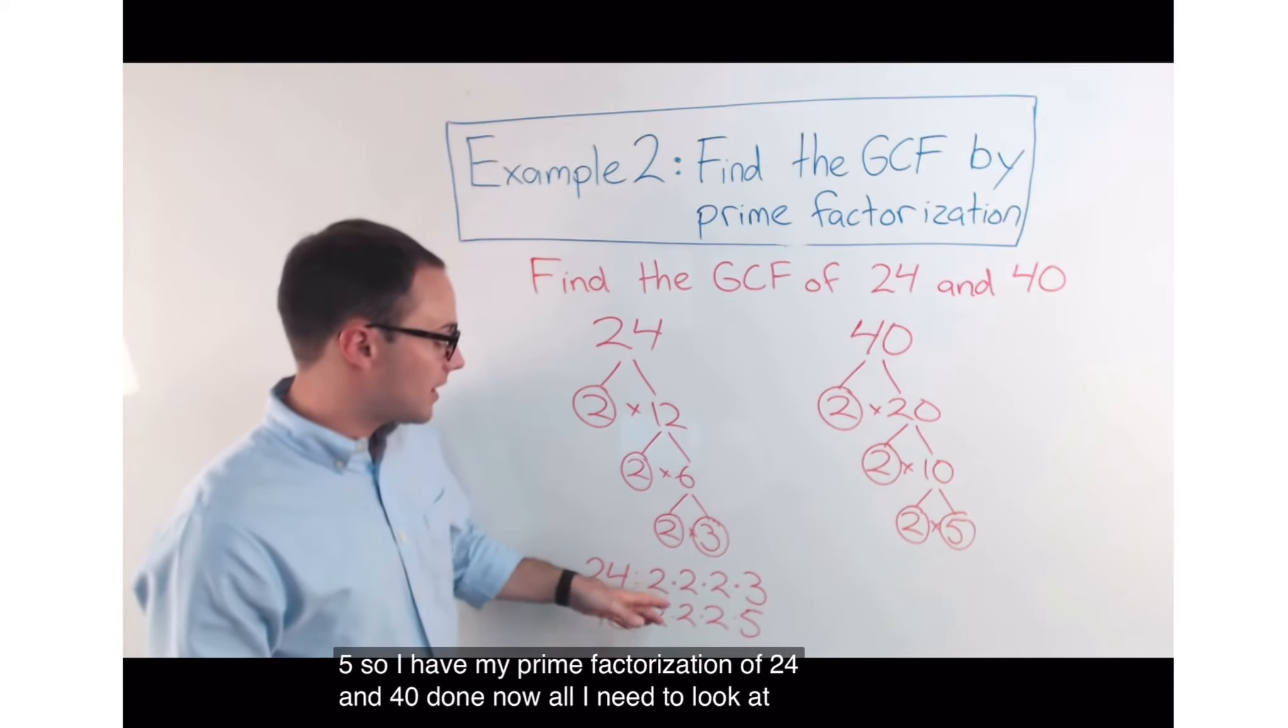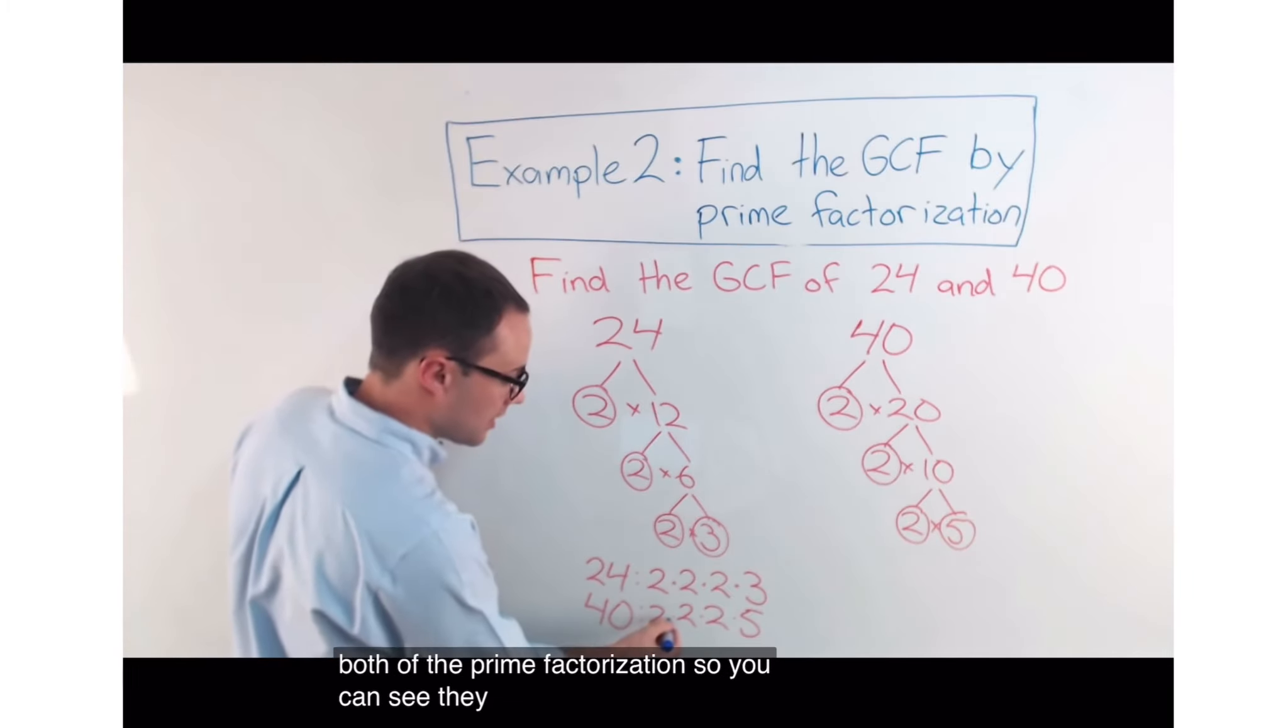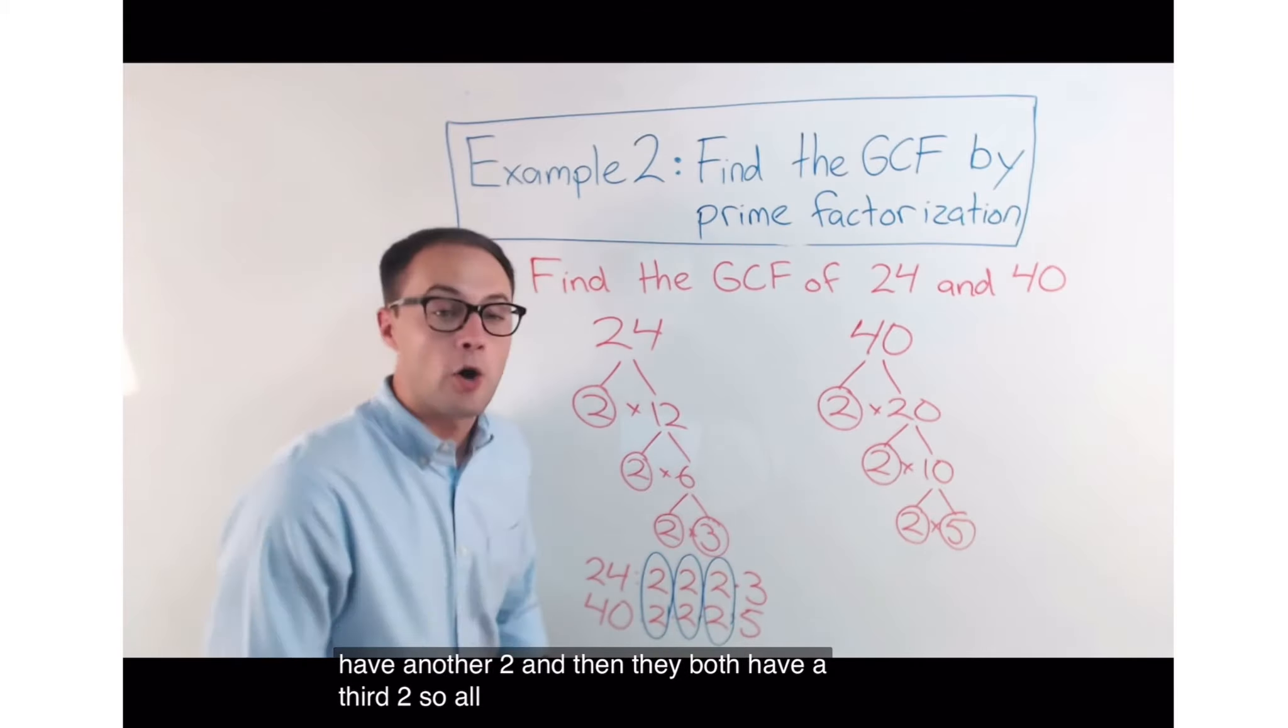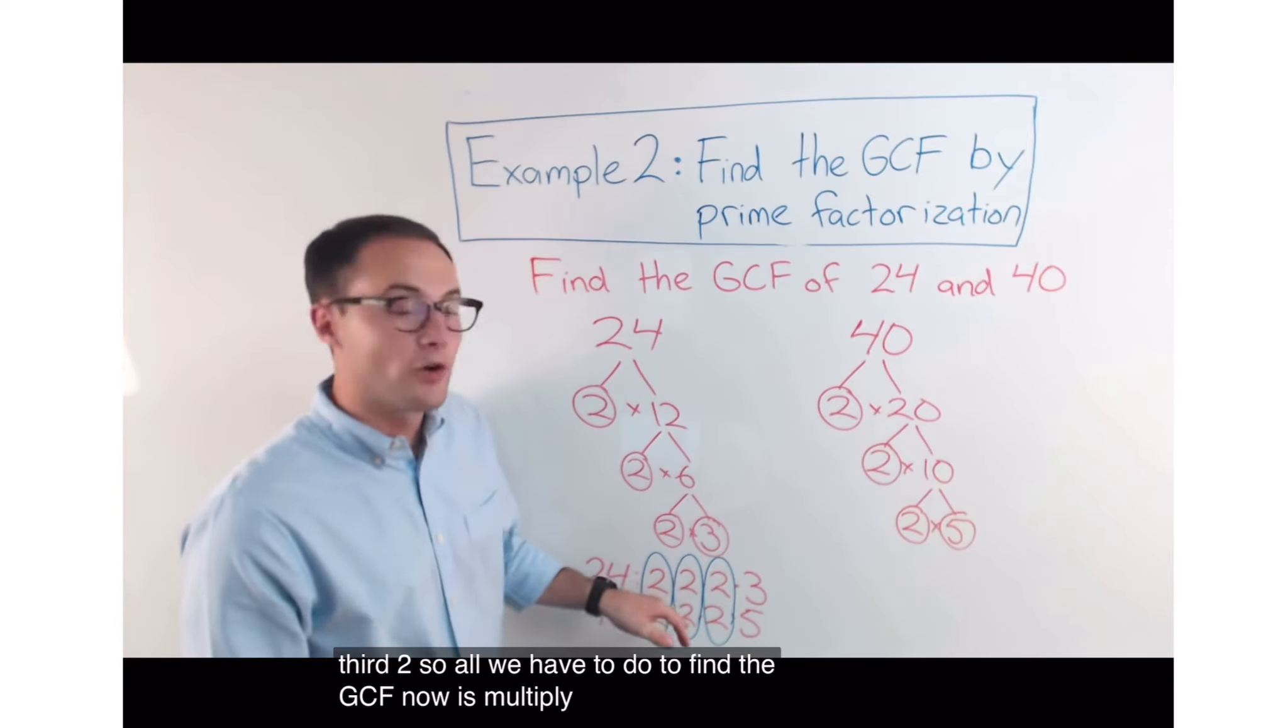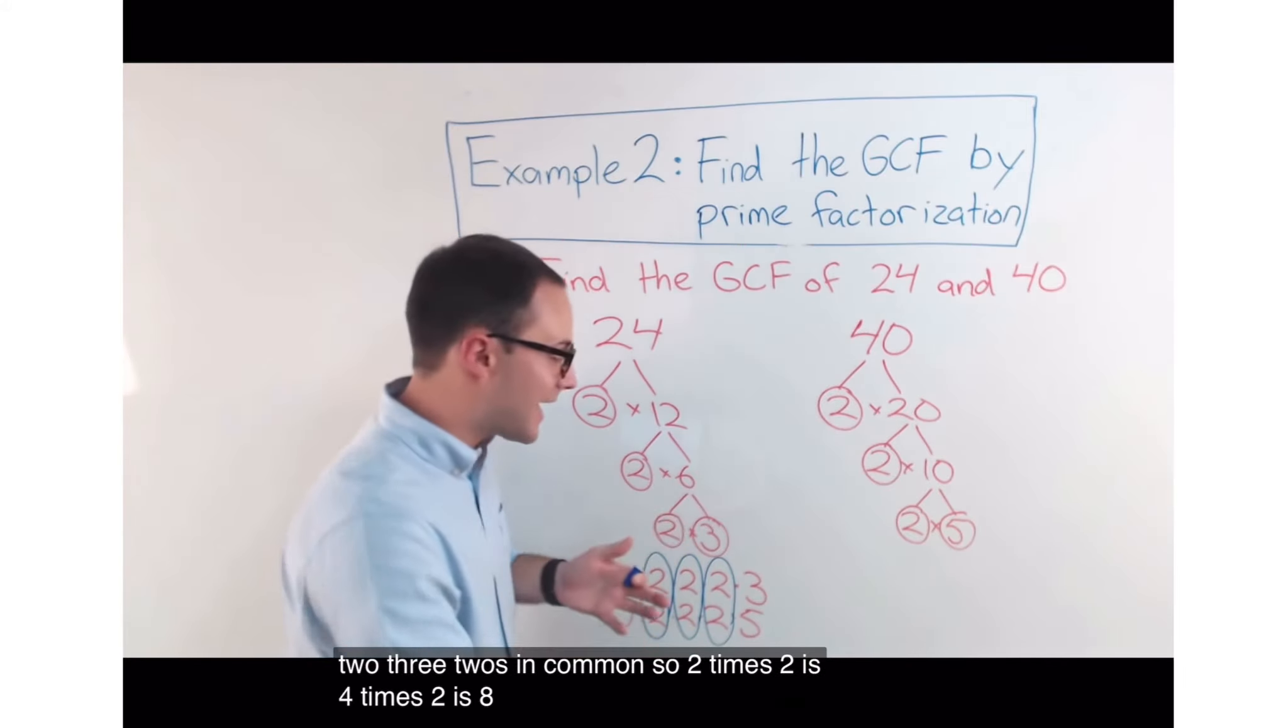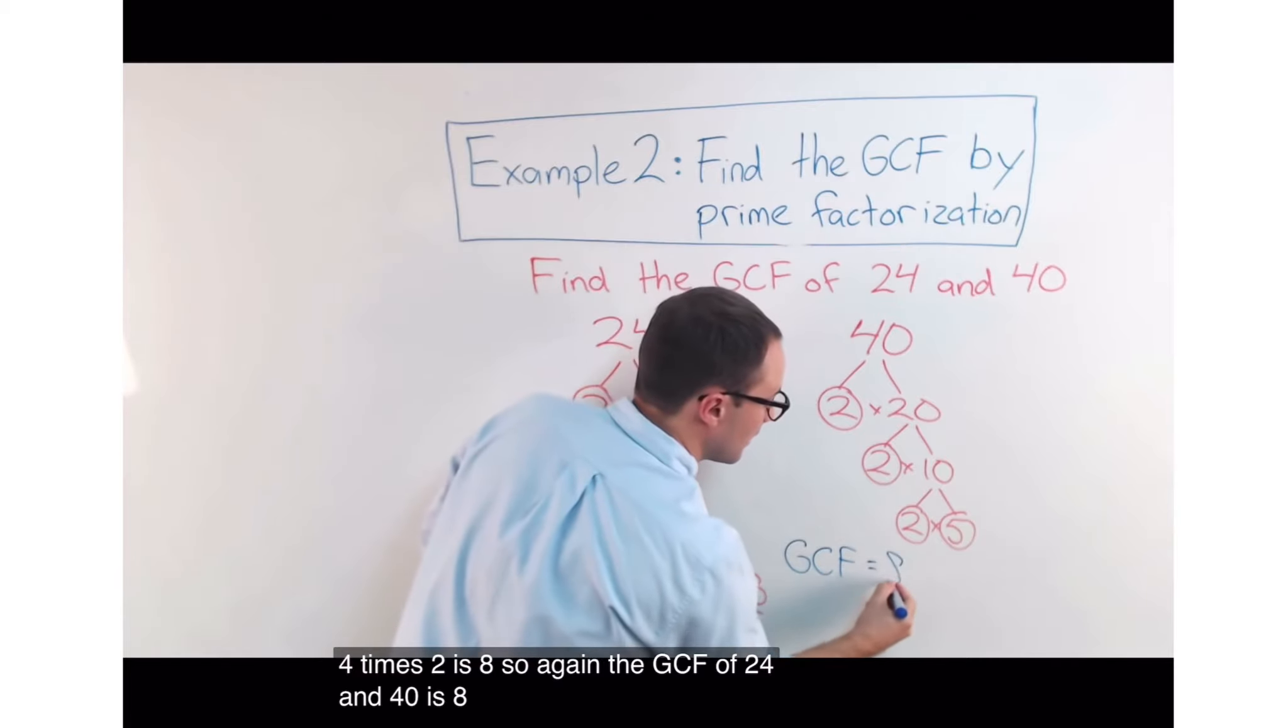Now, all I need to look at is see what prime numbers are in common for both of the prime factorizations. So, you can see they both have a 2. They both have another 2. And then, they both have a third 2. So, all we have to do to find the GCF now is multiply. So, they've got 1, 2, 3 2's in common. So, 2 times 2 is 4 times 2 is 8. So, again, the GCF of 24 and 40 is 8.